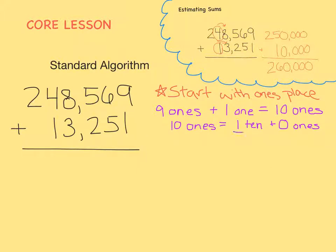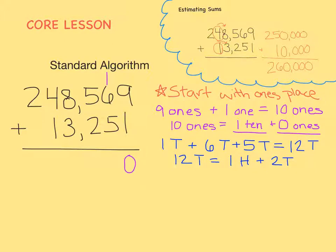That means one ten goes in the tens column, and zero ones goes under the ones place. Now, let's add the tens column: one ten plus six tens plus five tens equals twelve tens. We can't put two digits in one place, so twelve tens is the same thing as one hundred and two tens.